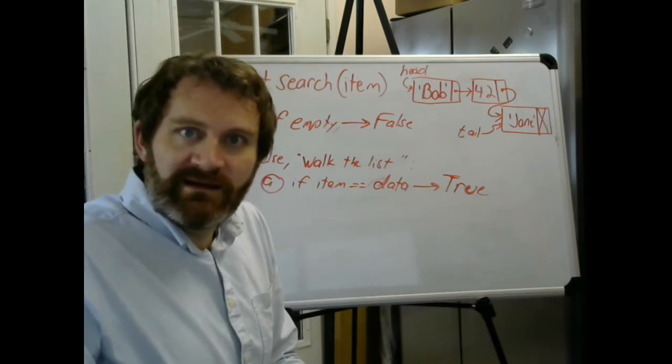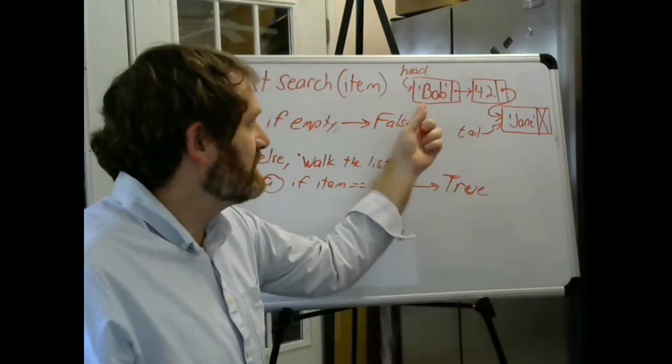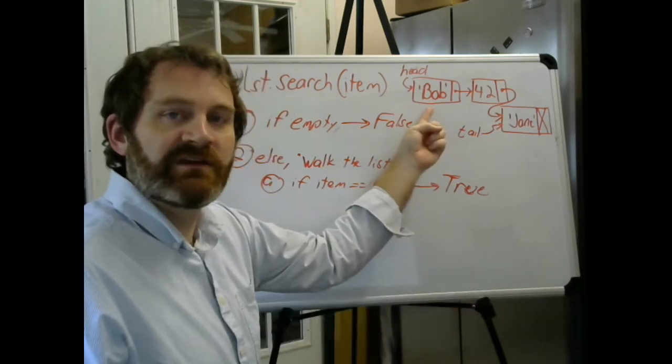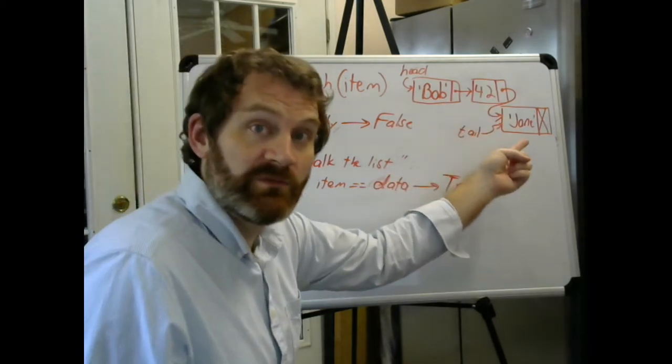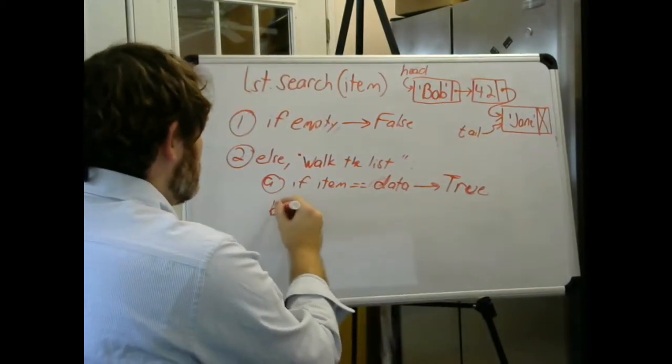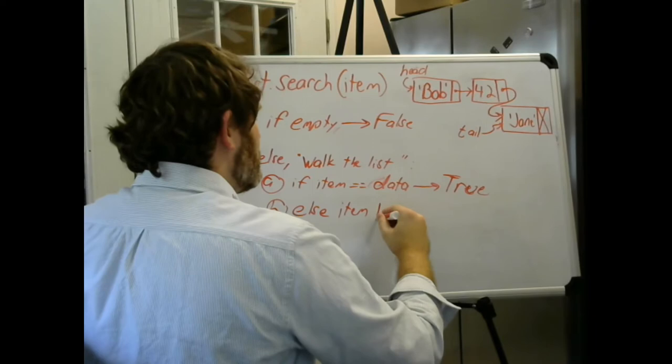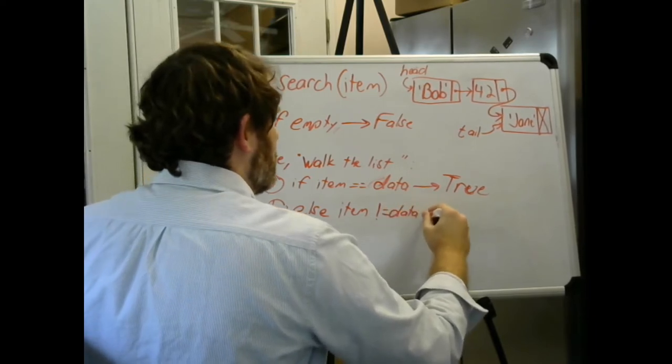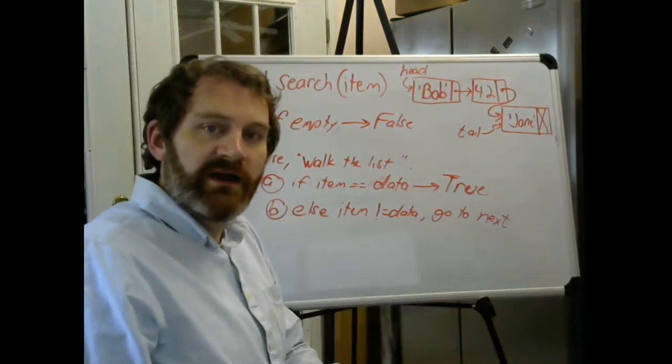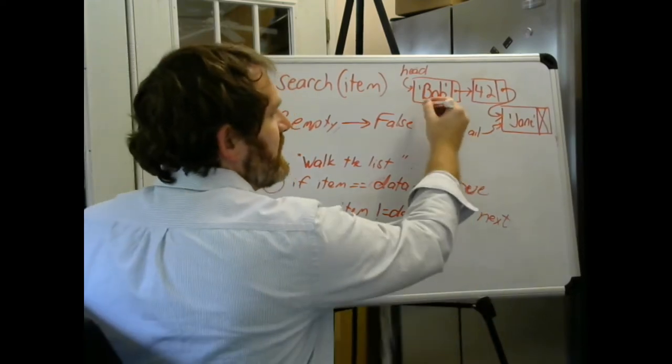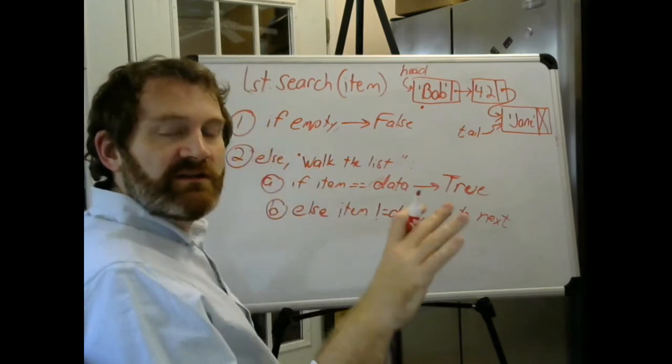If the item isn't in the data, if the item does not equal the data, then what do I do? Well, I don't stop searching. If I'm here looking for Jane, let's say I'm searching for Jane. Is Bob equal to Jane? No. So I go to the next one.